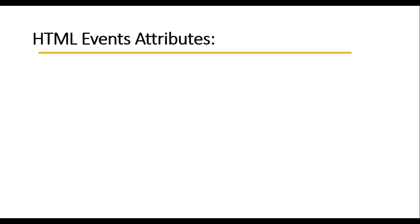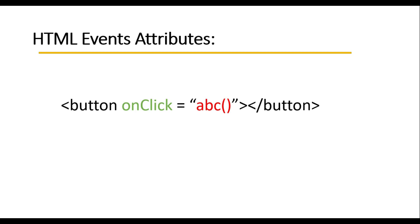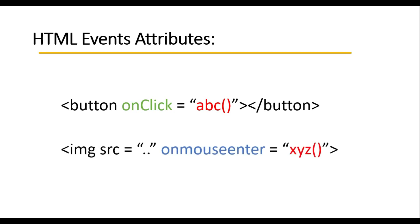If you didn't watch that video, the link is in the description. In that video we learned the use of events — you can add an event like, for example, a button with an onclick attribute, and whenever the user clicks the button the method specified in the double quotation will be called. Similarly, when hovering the cursor over an image, another method would be called. The issue is that whenever we want to call a new function we need to jump to the HTML page and type this inline code again and again, making our HTML page very lengthy.